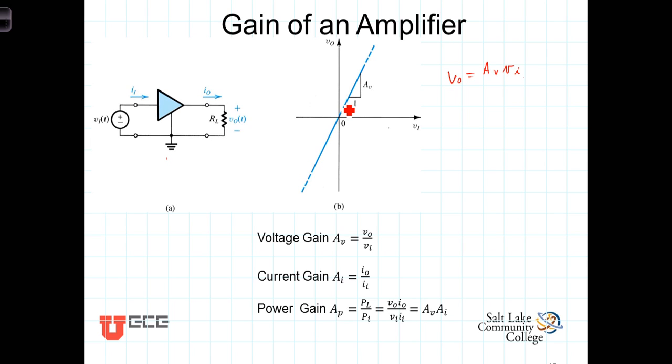For example, we can talk about the voltage gain of an amplifier, A_v, as being the ratio of the output voltage to the input voltage. In this case here, we define A_v as being the ratio of the output to the input. And if we're talking about a voltage gain, we're going to call it A_v for the gain, the voltage gain.